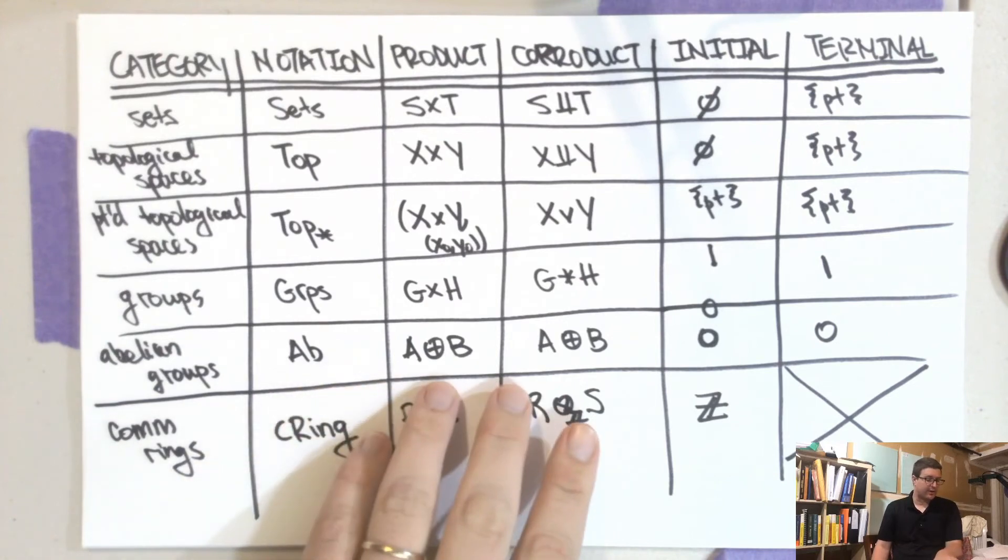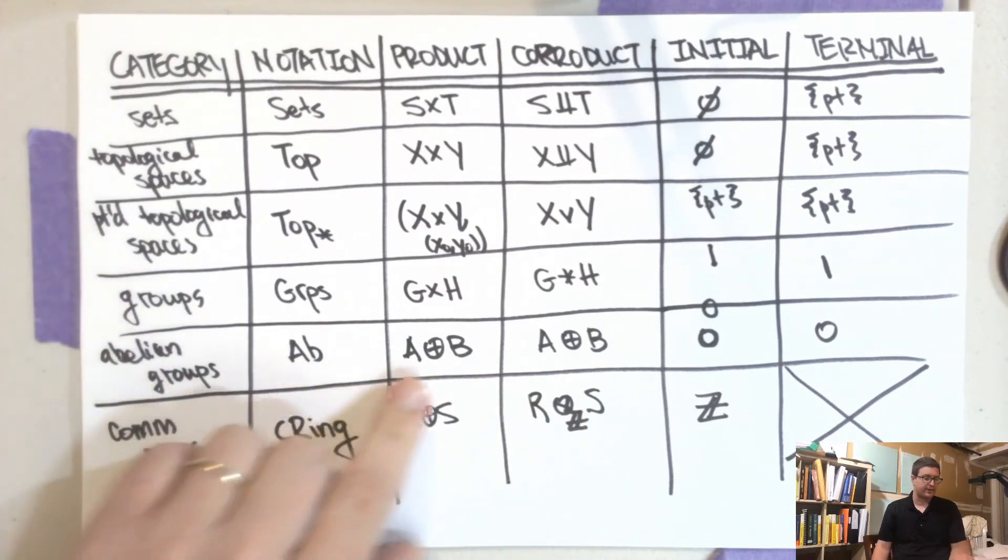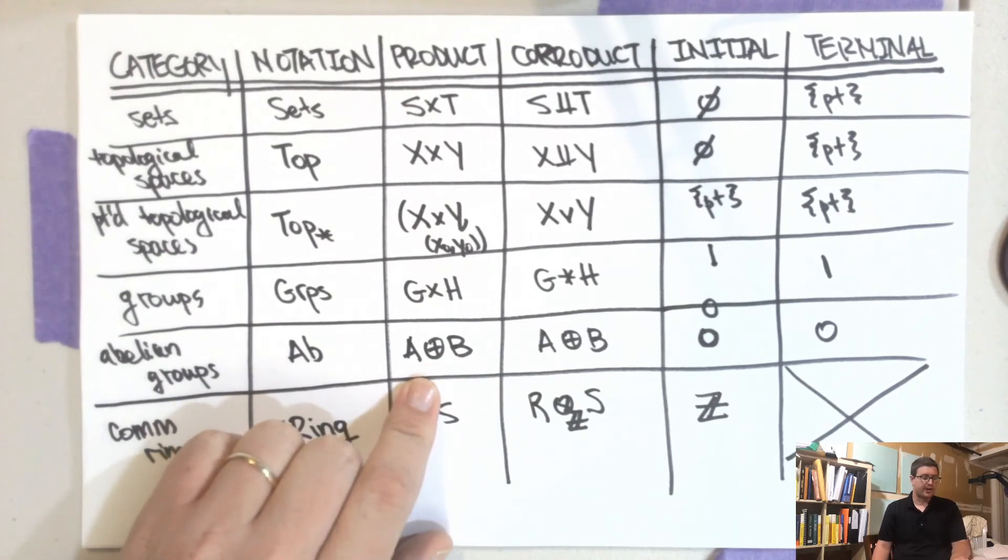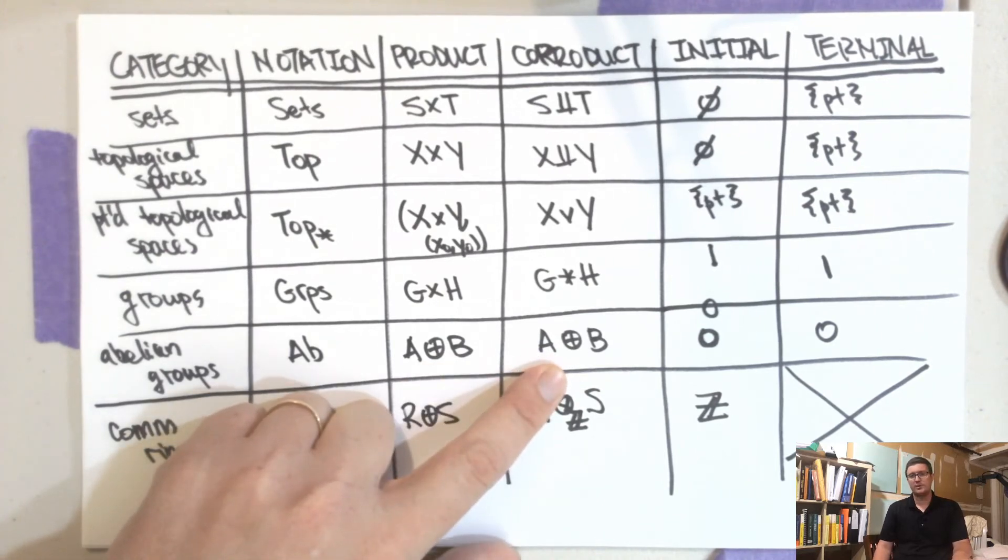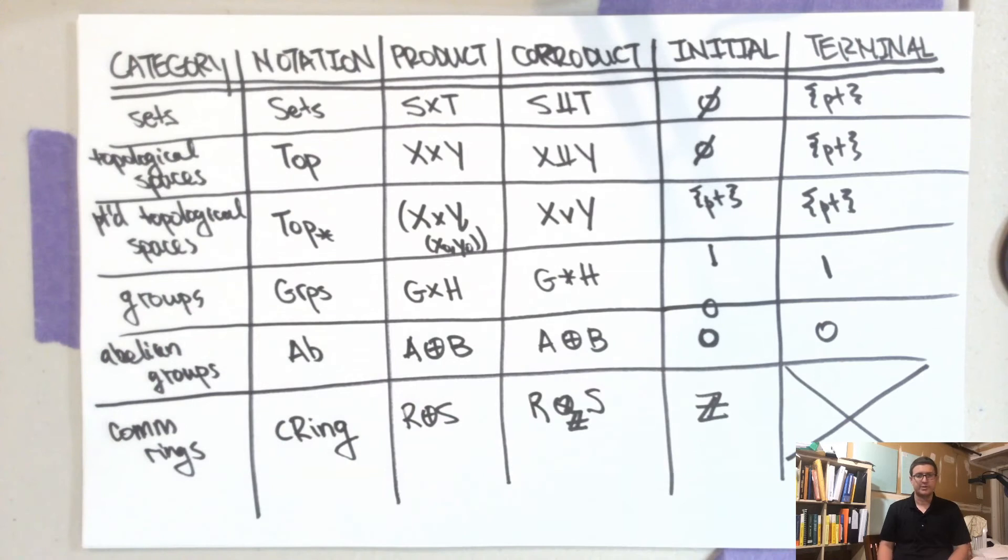Abelian groups are a nice category, and their product and co-product happen to coincide. Same with their initial and terminal object. This is true of things that are more generally called abelian categories.